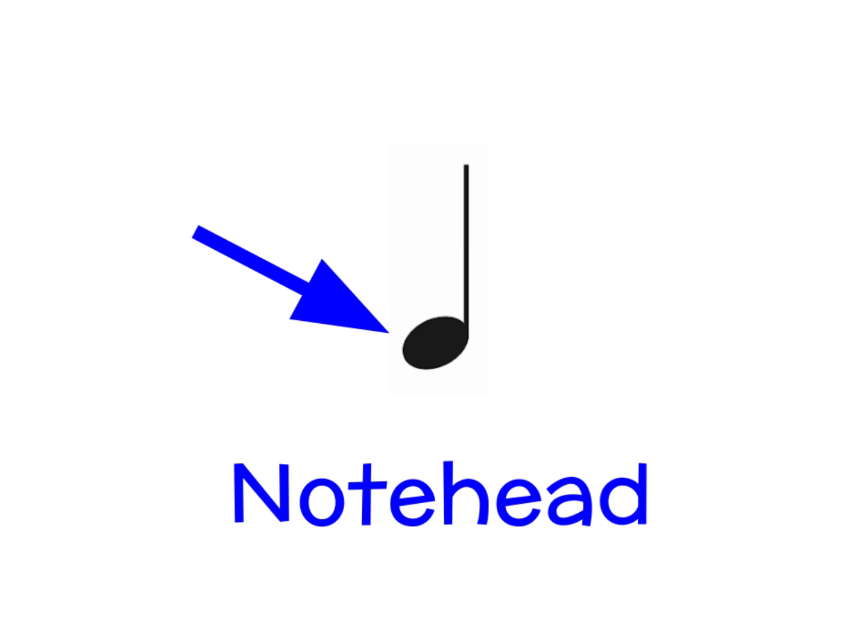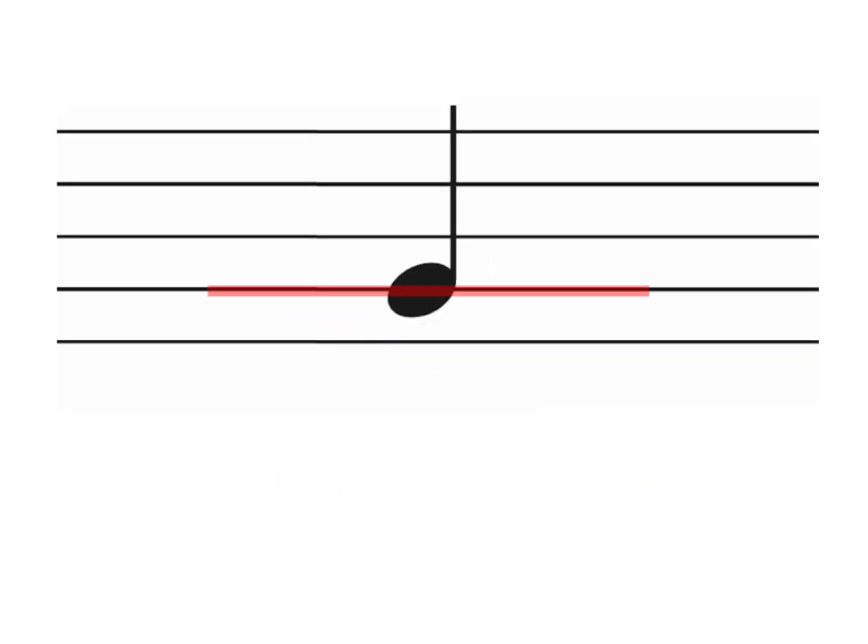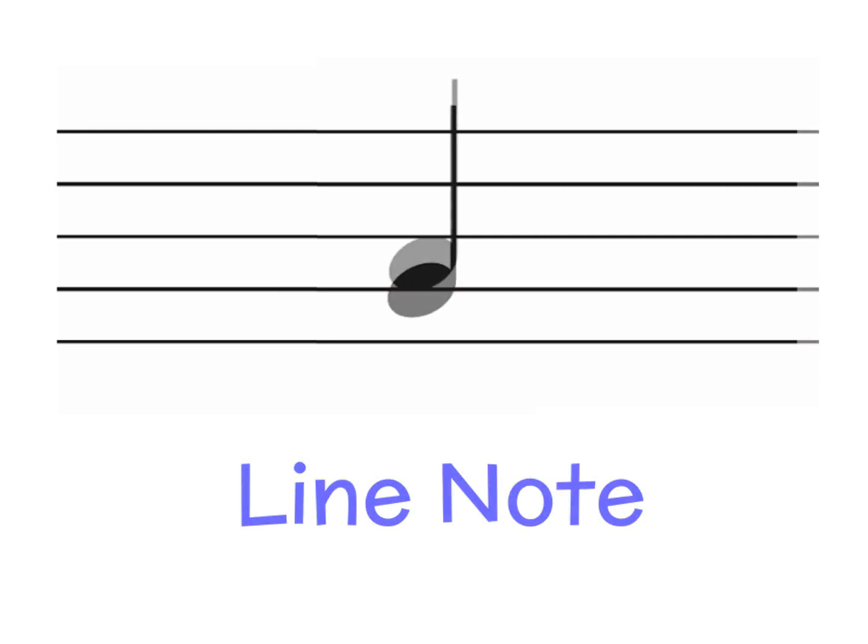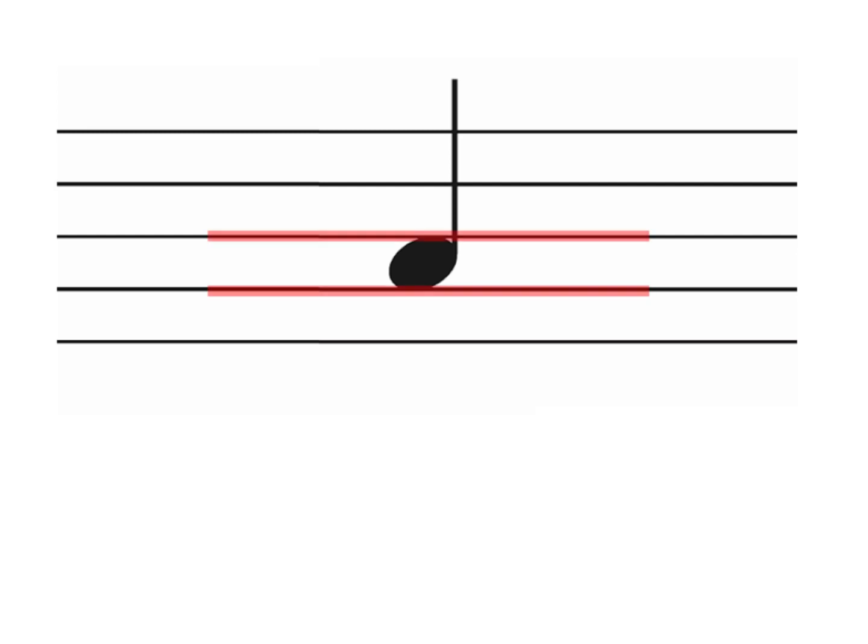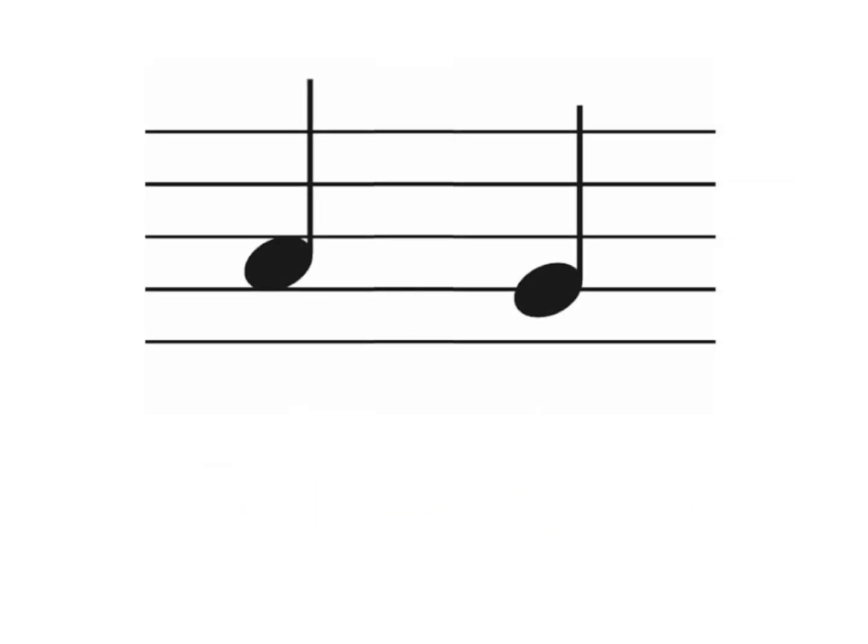When we look at a musical note, one of the most important parts of that note is called the note head, which is the round part of the note. If the note is placed on the music staff with a line going through the note head, we call that a line note. If the note head is placed in the space between two lines, we call that a space note. So we have space notes and line notes.